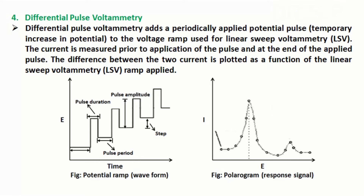Differential pulse voltammetry adds a periodically applied potential pulse — a temporary increase in potential — to the voltage ramp used for linear sweep voltammetry (LSV). The current is measured prior to application of the pulse and at the end of the applied pulse. The difference between the two currents is plotted as a function of the LSV ramp applied. In the figure you can clearly see the pulse duration, pulse amplitude, pulse period, and pulse step. A separate video on this topic in detail is also available.